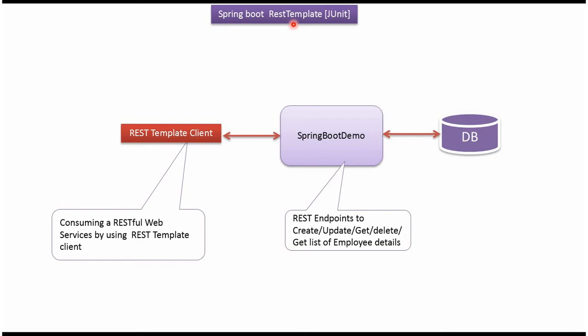In this video tutorial I will explain REST template client and we will write the test cases using JUnit. In this example we will use a MySQL database and a Spring Boot demo application which is a microservice. It exposes REST endpoints to create, update, get, and delete employee records, and also has REST endpoints to get the list of employee records. We will see using REST template client how to consume the web services exposed by the Spring Boot demo application.